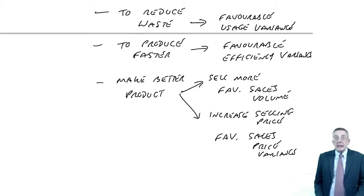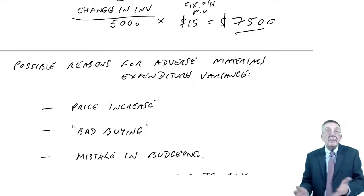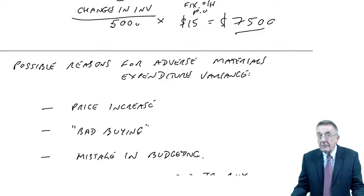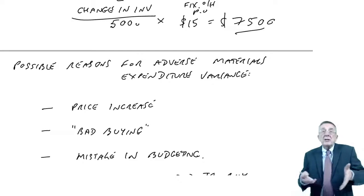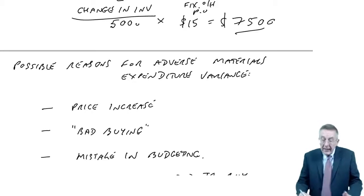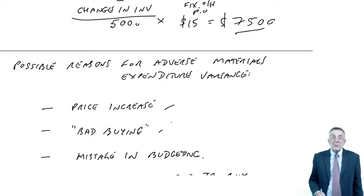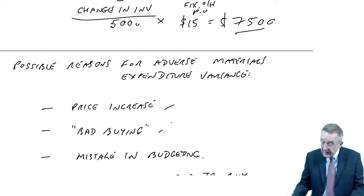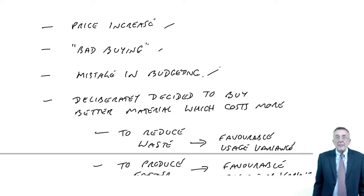The point I'm trying to make, these variances need investigating. If it's a price increase, we can't do anything about that. We're going to have to accept if there's a price increase, adverse variance then it's going to carry on all year. If it's bad buying, we can do something about that. Train the buyer to buy better or replace them. If it's a mistake in the budgeting, not much we can do this year, but make sure next year we try and budget without making mistakes.